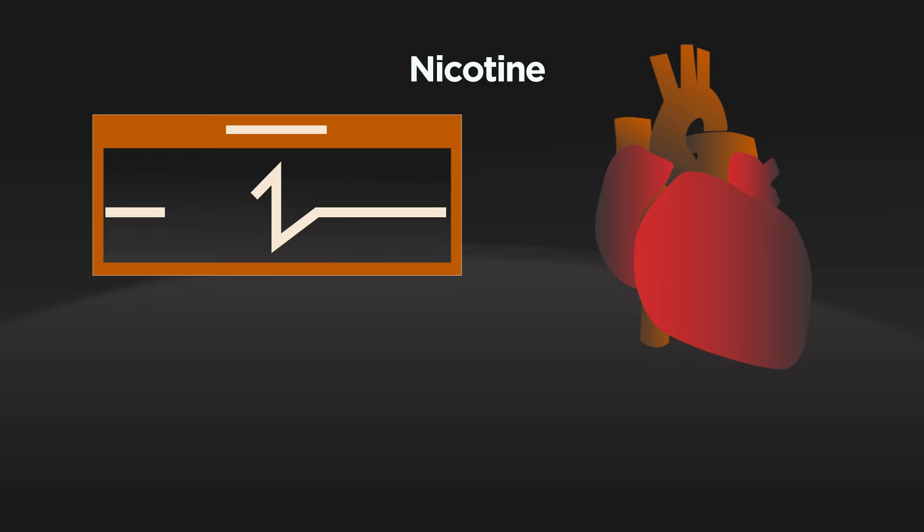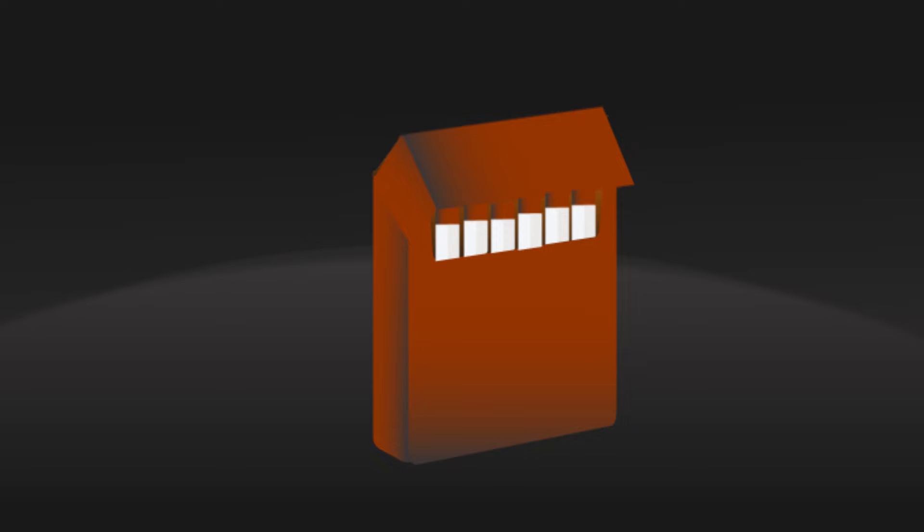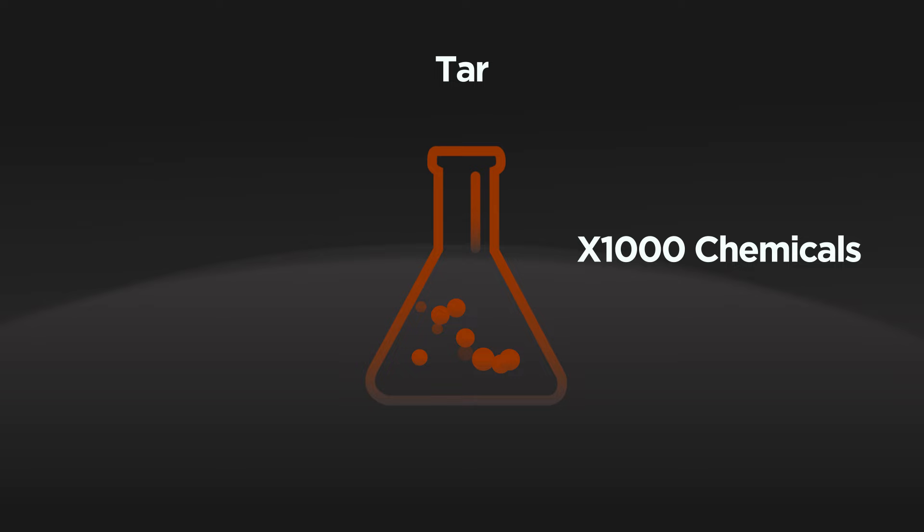Nicotine is a toxin that stimulates your body to produce adrenaline. This increases your heart rate and raises your blood pressure, thus making your heart work harder. It is also addictive, which is why it's very difficult for smokers to quit.